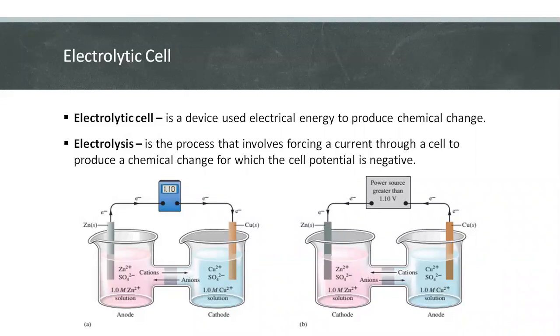This figure illustrates the difference between a galvanic cell and an electrolytic cell. Figure A is a galvanic cell and it runs spontaneously to produce 1.1 volts.